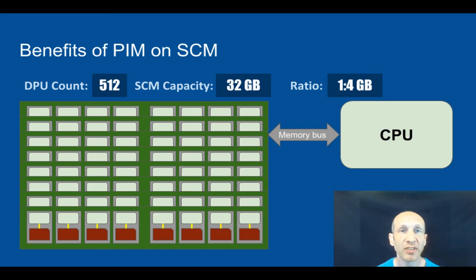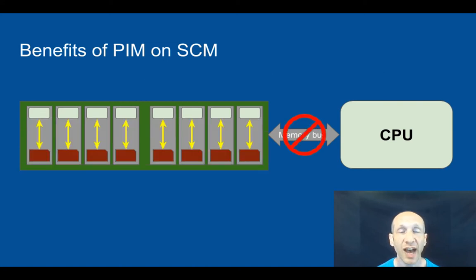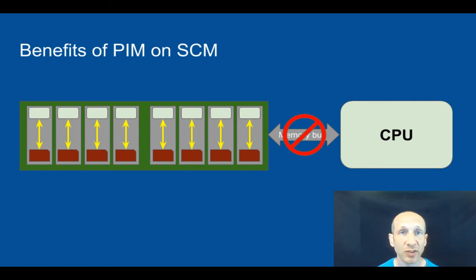Another benefit is that we can continue to process data after it has become durable. Once an application writes data to storage, it expects that the data will be stable and retrievable later. Once it's inside the storage class memory, we can continue to process the data as long as it doesn't violate the guarantee of durability. Then we don't have to use the memory bus or the CPU, and we can improve throughput of the application.